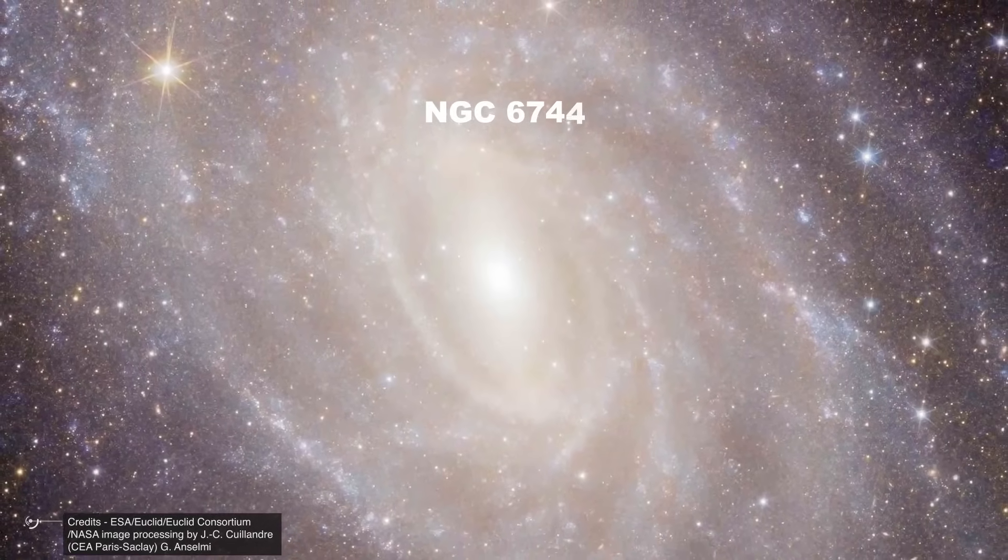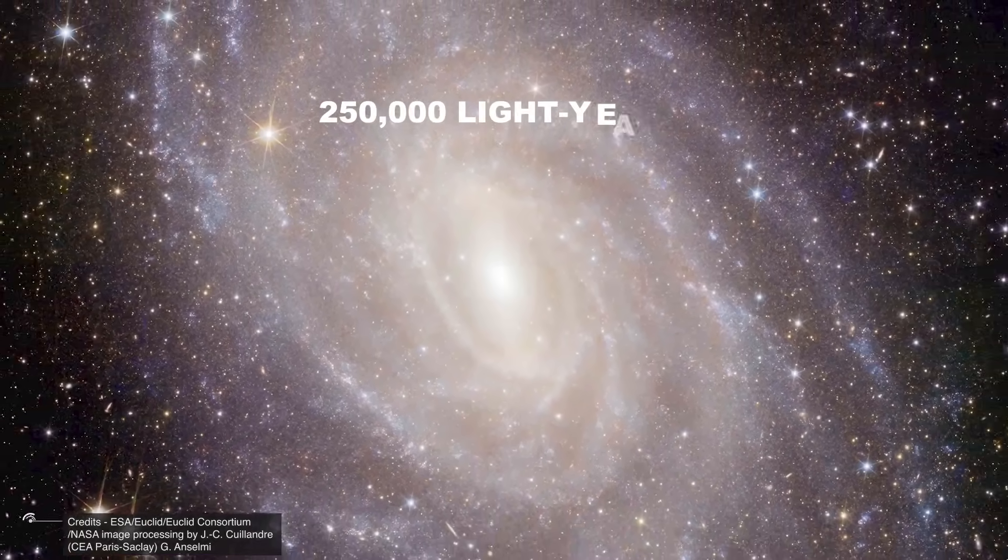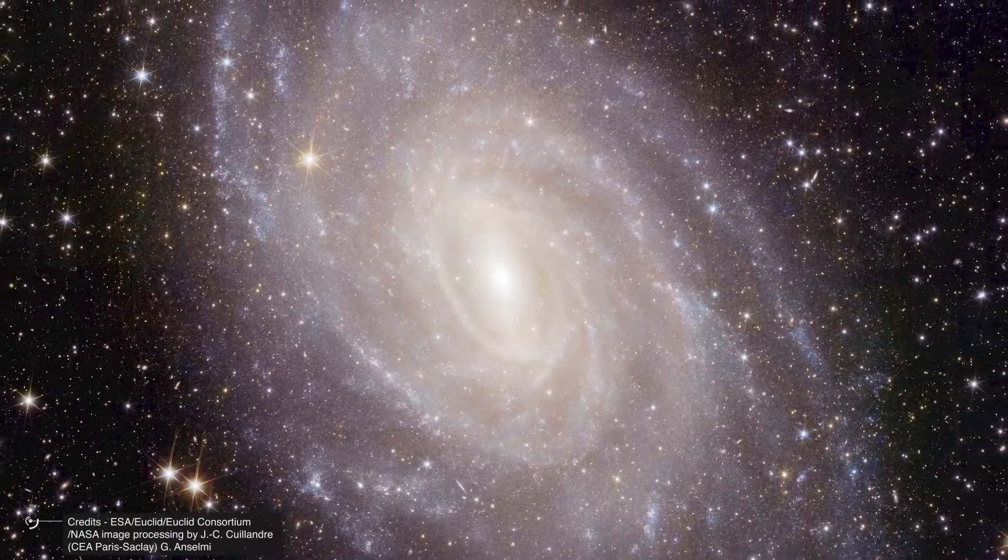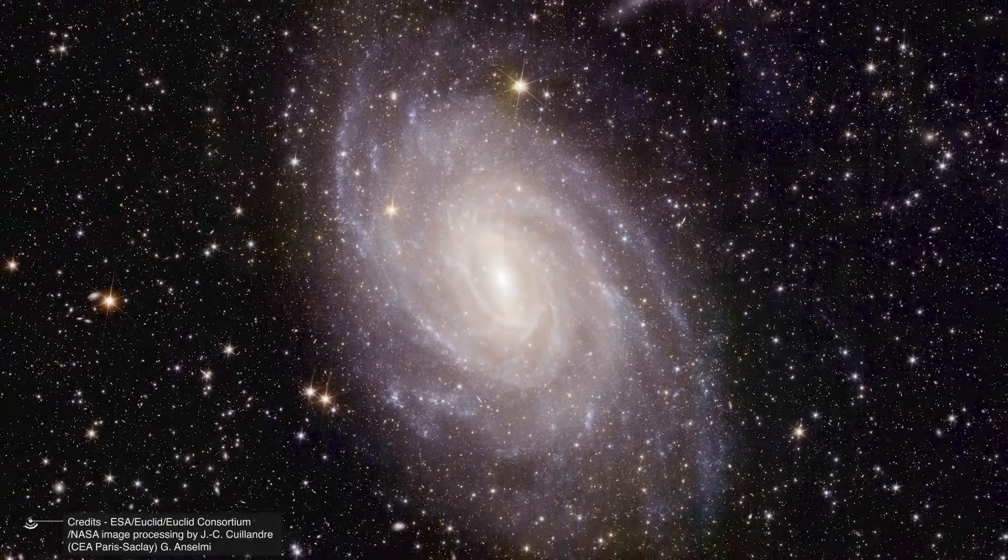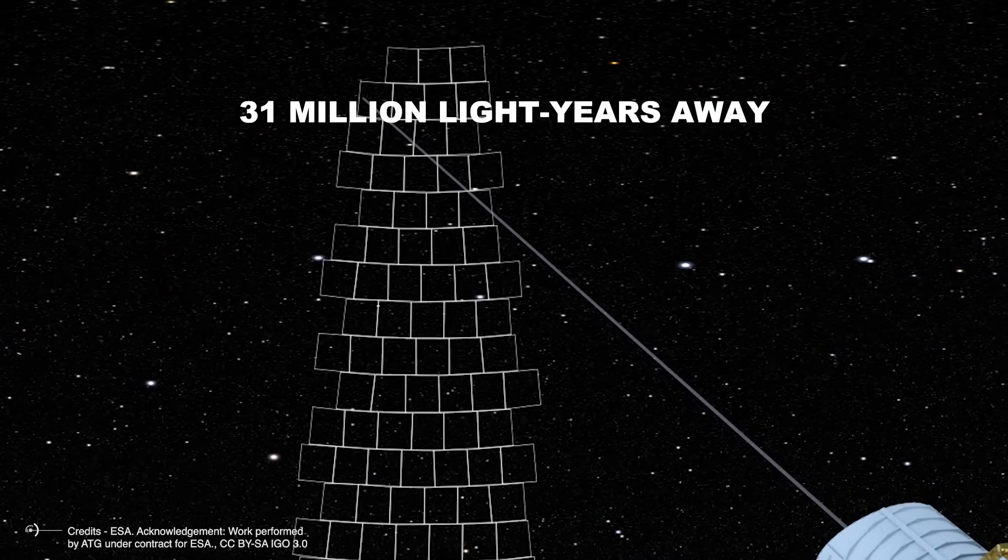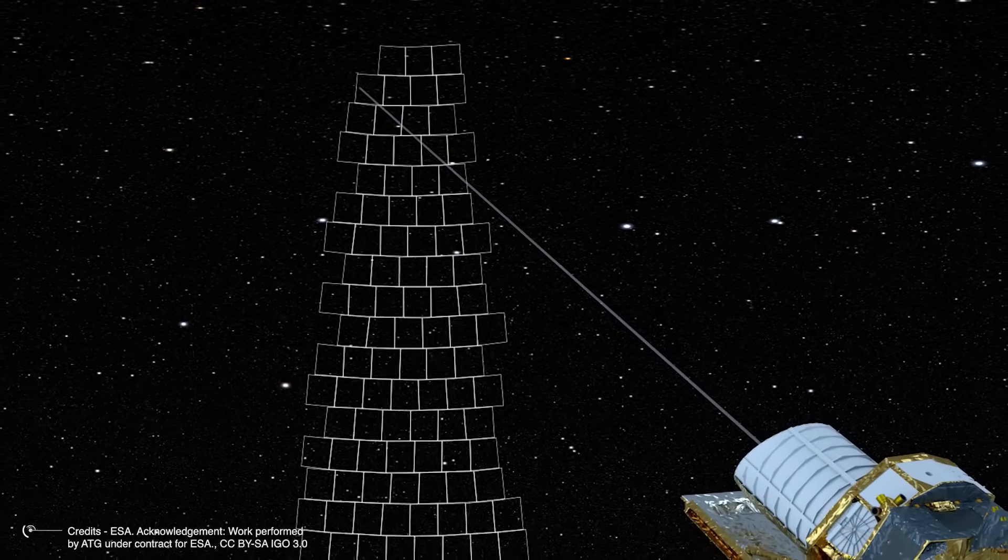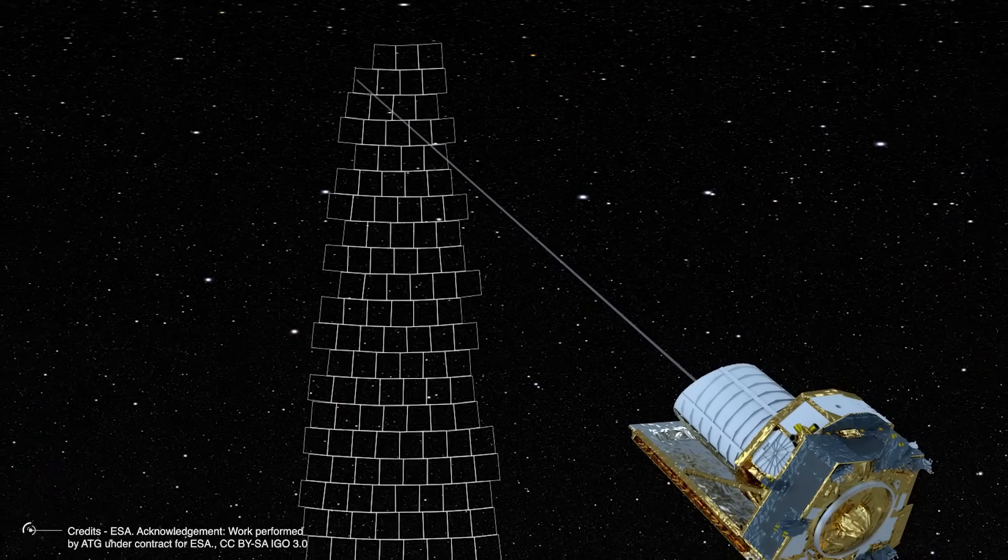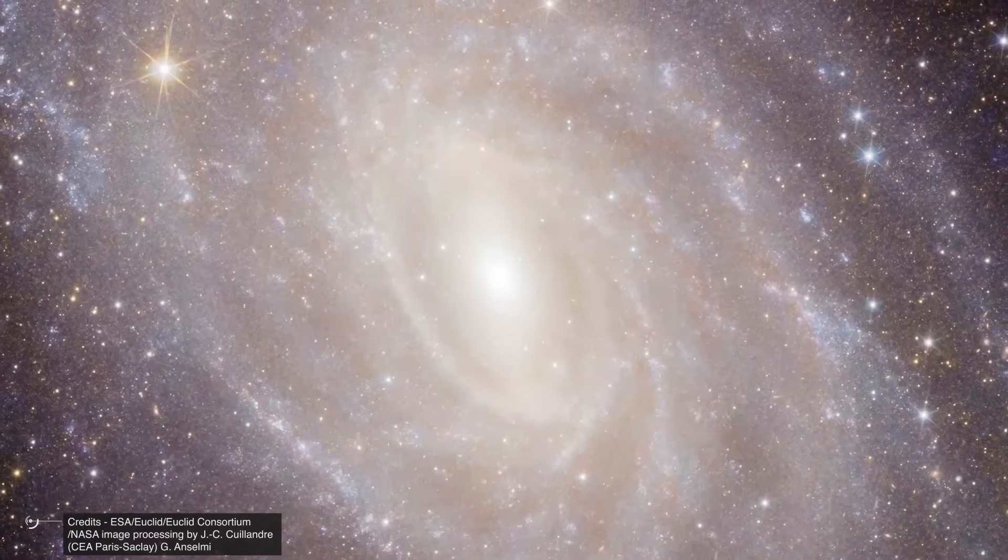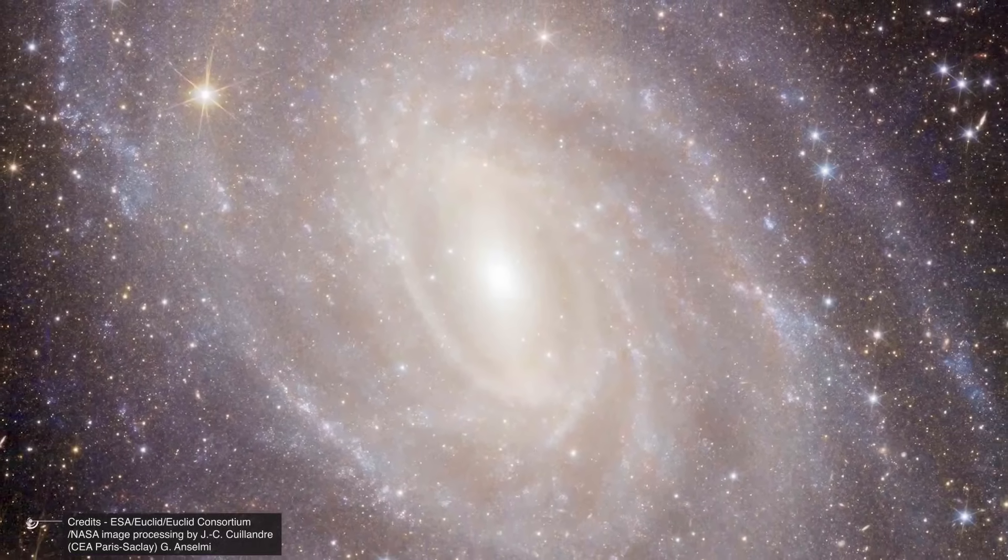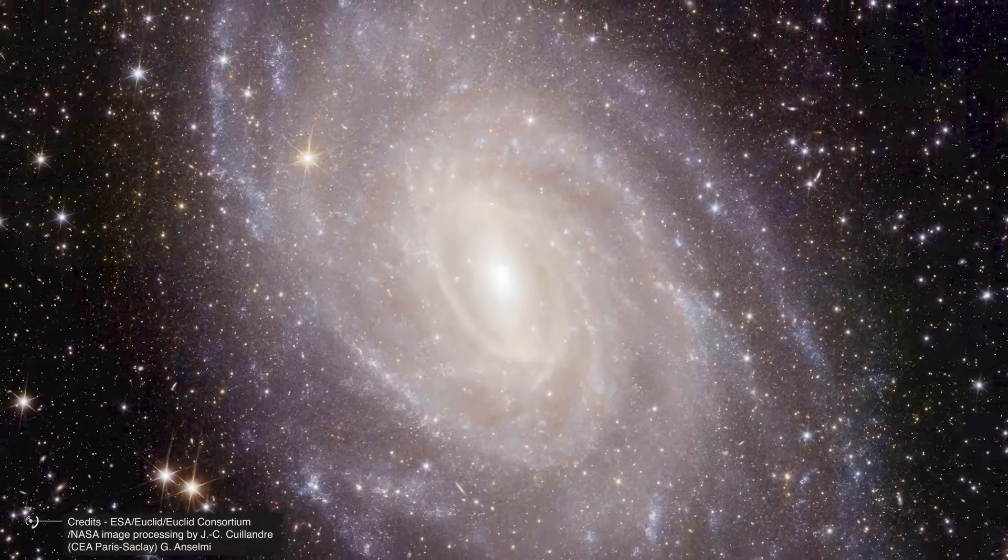Another image shows NGC 6744, which, with a diameter of 250,000 light-years, is undoubtedly one of the largest spiral galaxies in the local universe. It's located 31 million light-years away, and Euclid's wide field of view, about 30 arc minutes, practically equal to the angular diameter of our moon just to give you an idea, covers the entire galaxy, capturing not only the spiral structure but also fine details such as feather-like dust filaments emerging from the spiral arms.